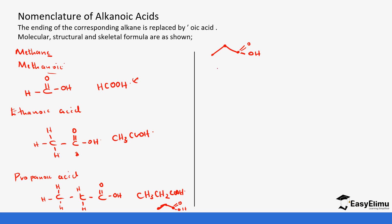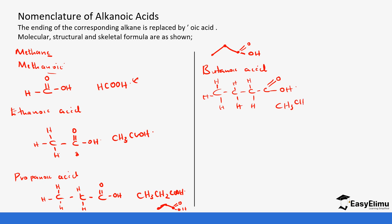And then we go to butanoic acid. This has four carbons. You put oxygen and OH on the last carbon. When you condense it, it becomes CH₃CH₂CH₂COOH. For the skeletal representation: first carbon, second, third, and then fourth — you put the double bond here and OH at the bottom.